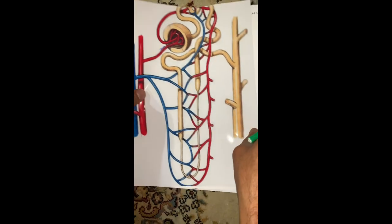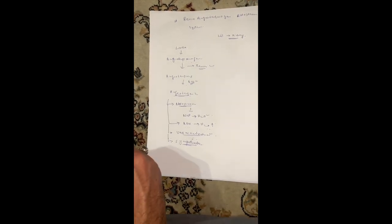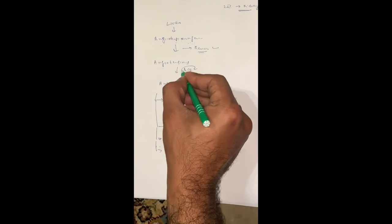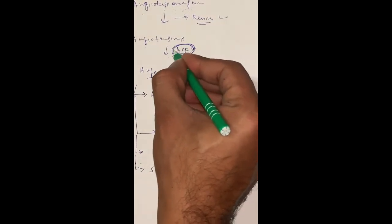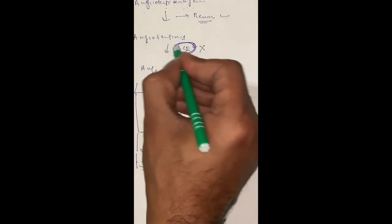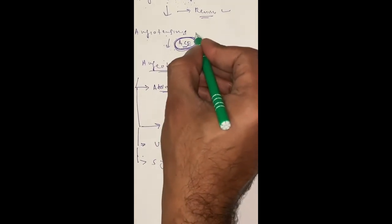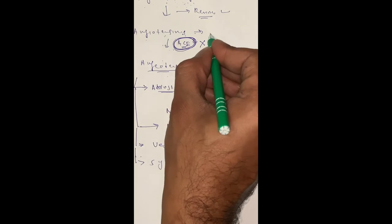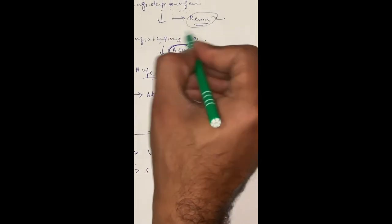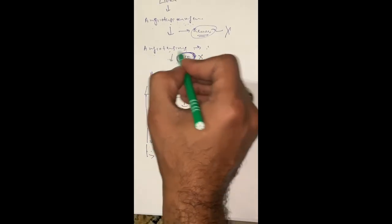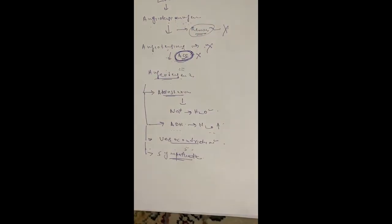For example, when a hypertensive patient comes to us, we mostly give medicines targeting the angiotensin-converting enzyme. This ACE is present in the endothelium of the lungs; when it is inhibited, angiotensin I will not convert into angiotensin II. We can also use drugs for angiotensin I inhibition, or inhibition of renin itself. When renin is not released, the entire mechanism will be blocked.